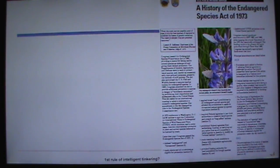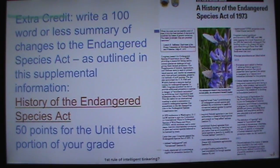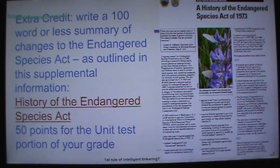There's an extra credit assignment: a page from the U.S. Fish and Wildlife Service's article on the History of the Endangered Species Act. Write a 100-word or less summary of the changes to the ESA as outlined in that article. It's worth 50 points toward your unit test grade and is due by the end of the term.